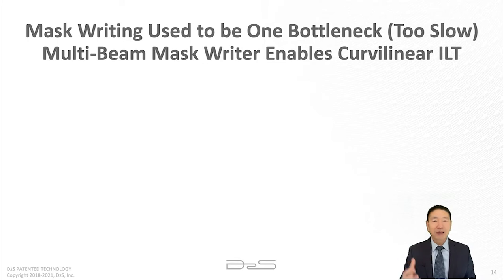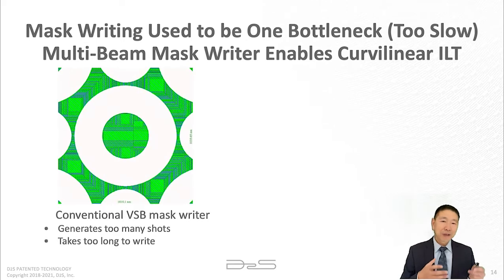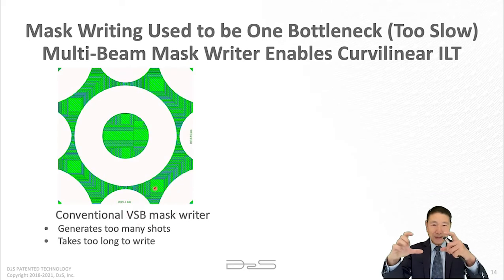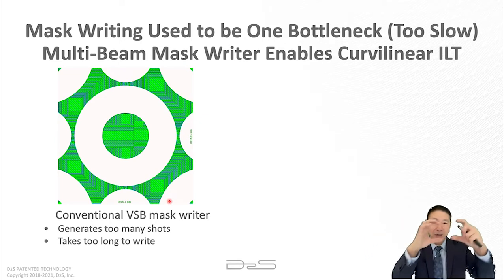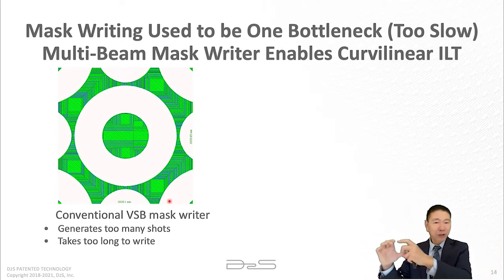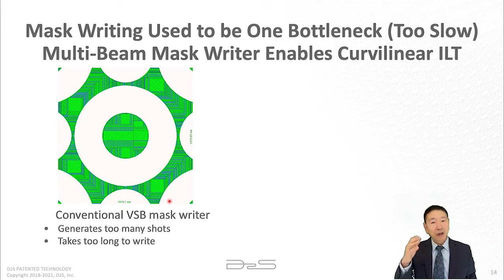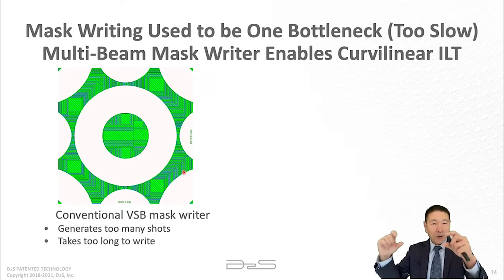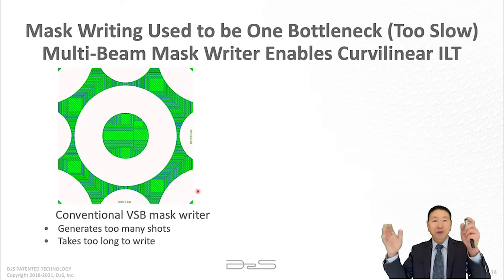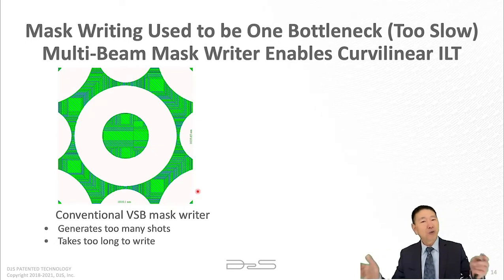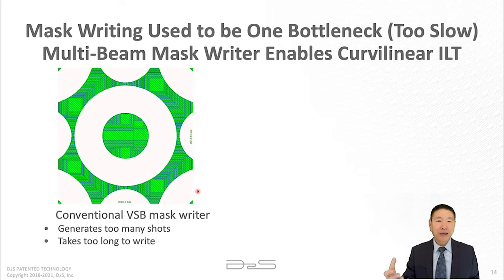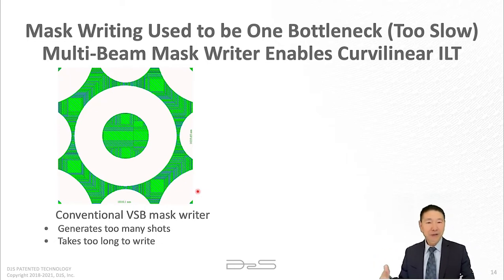It turns out there are two technical challenges. The first is mask writing. The mainstream mask writer is the VSB mask writer, which writes single shots of different sizes — essentially rectangles, like bricks. For Manhattan patterns, different-sized bricks build the pattern quickly. But for curvilinear patterns with a VSB mask writer, you need very tiny bricks, resulting in too many shots. Since write time is proportional to shot count, the write time becomes impractically long — potentially several days versus the practical limit of about one day.